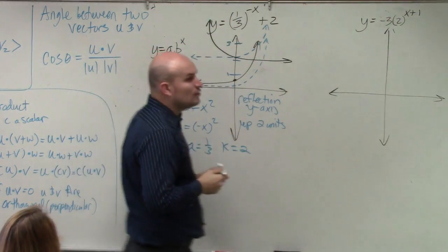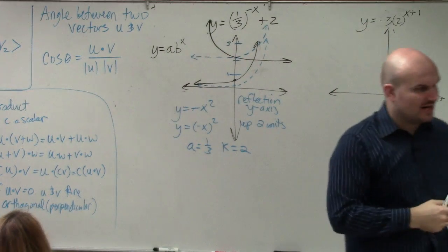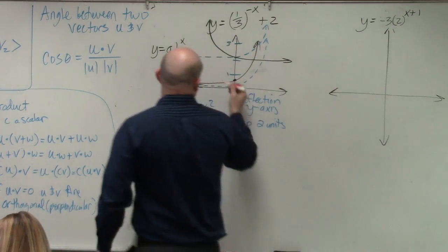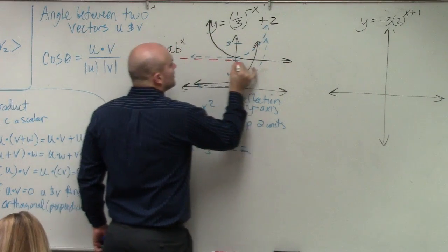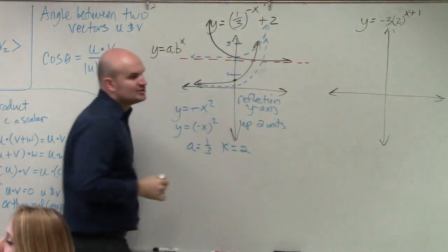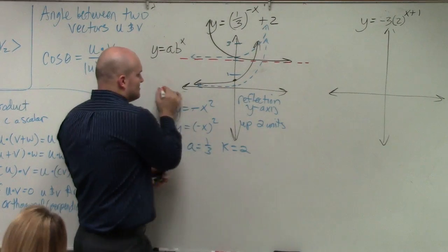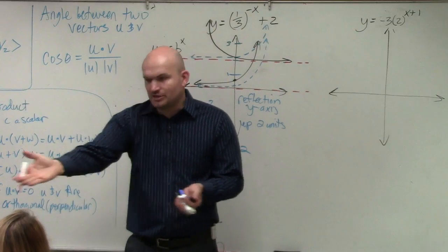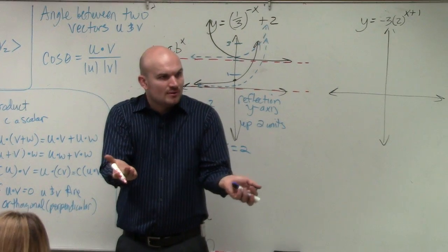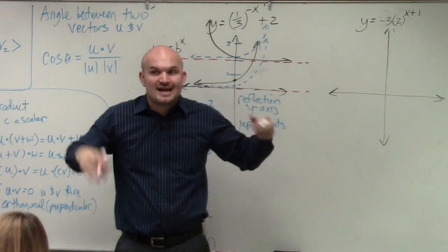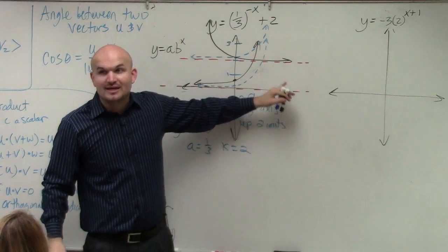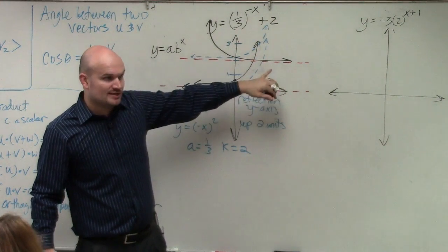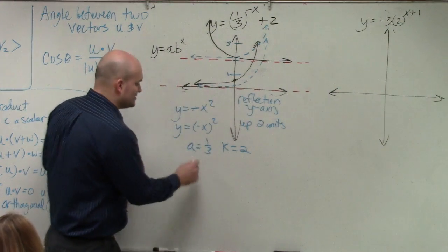Now, not only did my graph get shifted up, but what else got shifted up my graph? The asymptote. The reason why that shifting up that asymptote is really important, because remember, this original asymptote was right here. And when you look at Desmos or on your calculator, it doesn't show you the asymptote. So it's really important for you guys to understand there's an asymptote at 0. If you shift the graph up 2 units, my asymptote has shifted up 2 units.